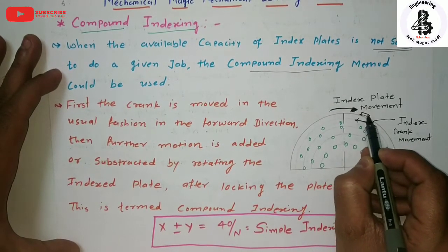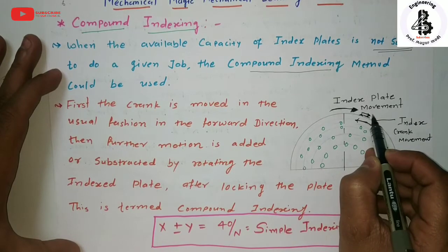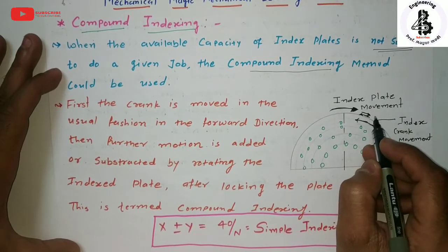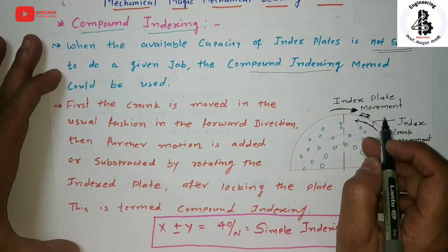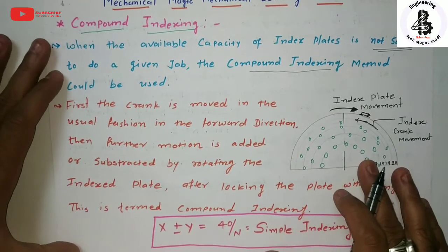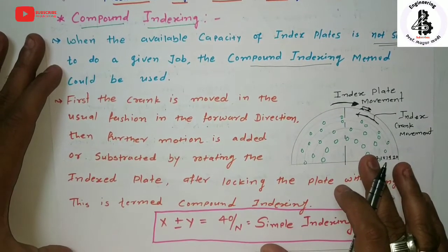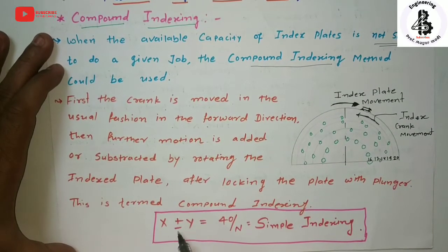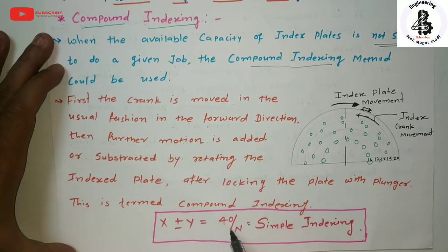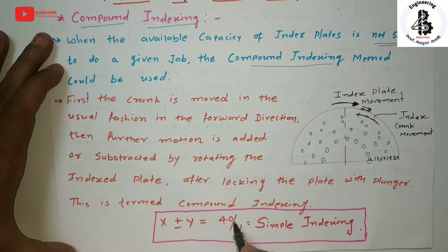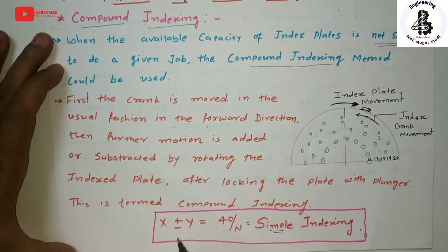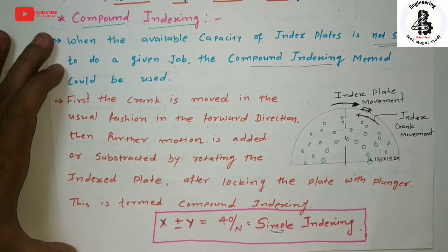Then, according to the given equations or relations, motion is added in the forward direction or considered as the backward direction. This depends upon which kind of relation or equation is being adopted to perform the compound indexing problem. The equation is: x plus or minus y equals 40 divided by N, where 40/N is nothing but the simple indexing mechanism.